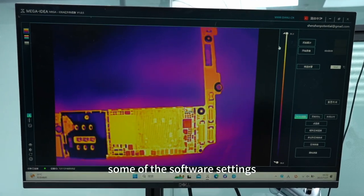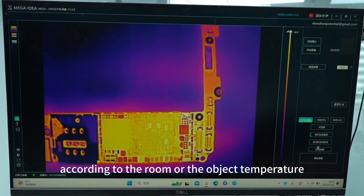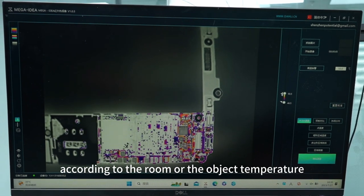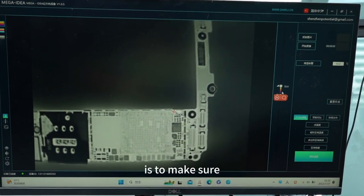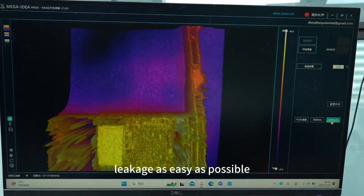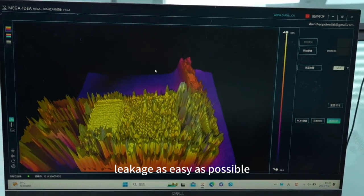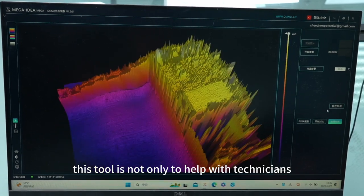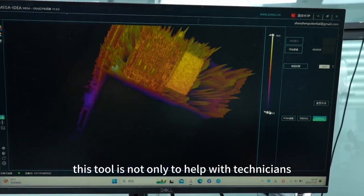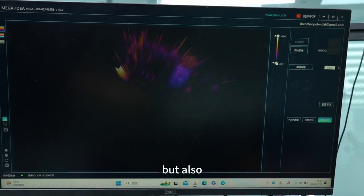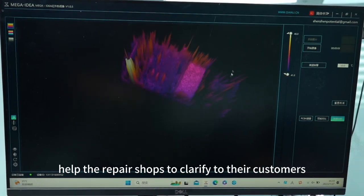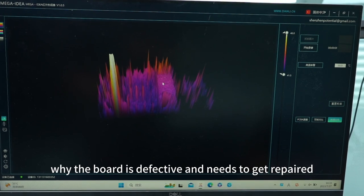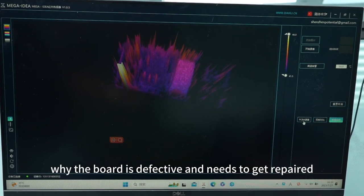You can also adjust some of the software settings according to the room or the object temperature. The main goal of the software setting is to make sure you can tell the electricity leakage as easily as possible. This tool not only helps technicians detect board issues, but also helps repair shops clarify to their customers why the board is defective and needs to be repaired.